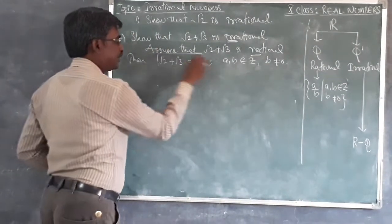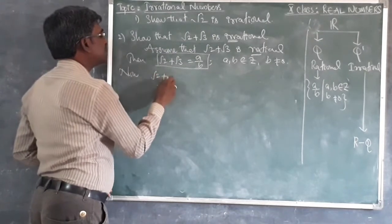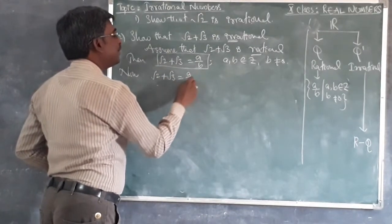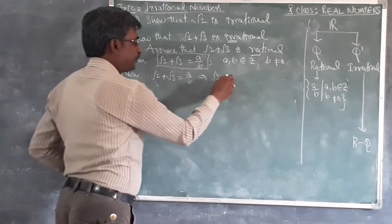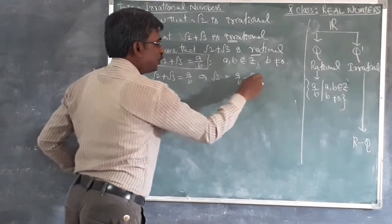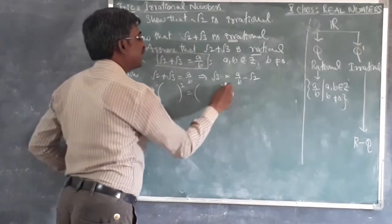Now from that, take this root 2 plus root 3 is equal to A by B. This implies root 3 is equal to A by B minus root 2. Now continue on squaring both sides.